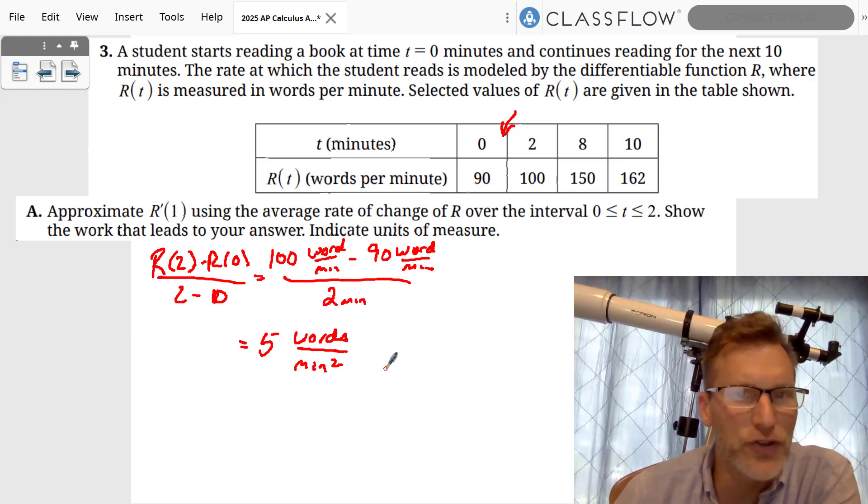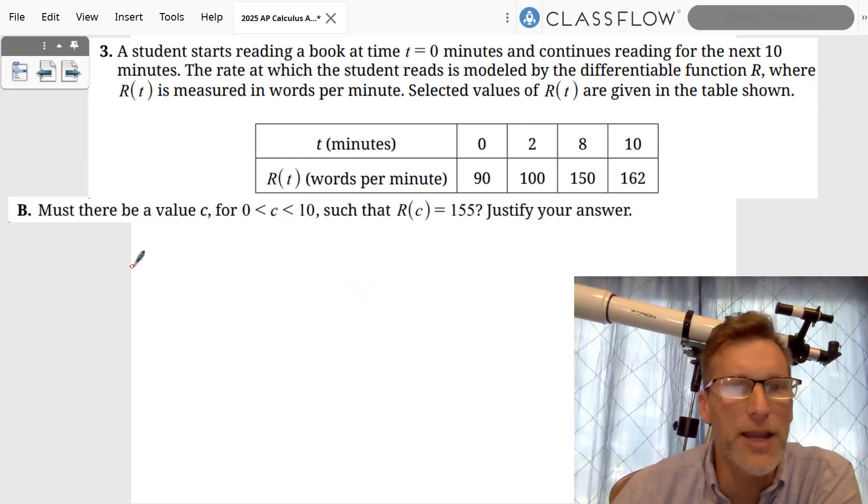And what are the units? It's words per minute squared. Words per minute squared. It's the average rate of change of this rate, and so it's words per minute squared. That's Part A.